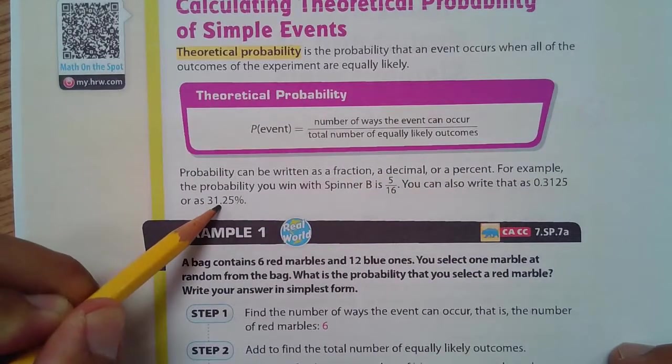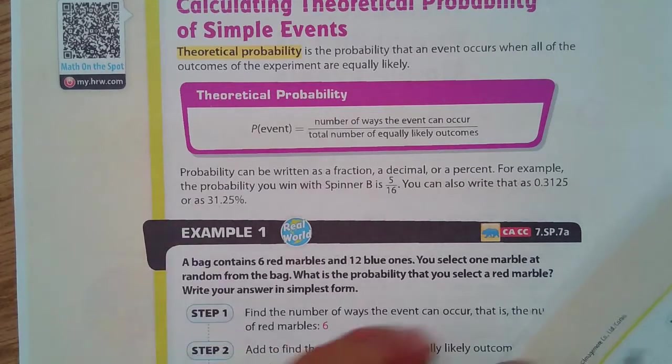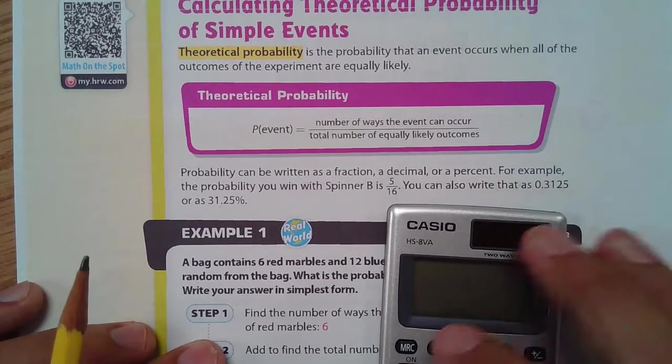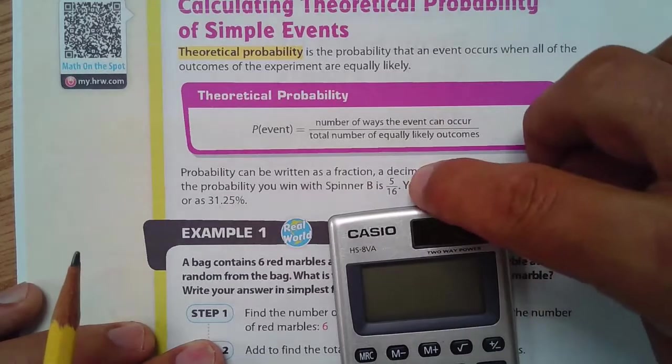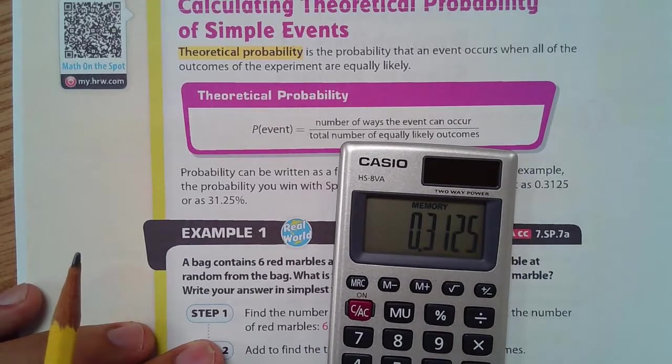You can also write that as 0.3125 or 31.25%. All you have to do is move the decimal two times, you've now changed the decimal to a percent. And you get that 0.3125 by putting it in the calculator, 5 sixteenths, you have 5 divided by 16, 0.3125.